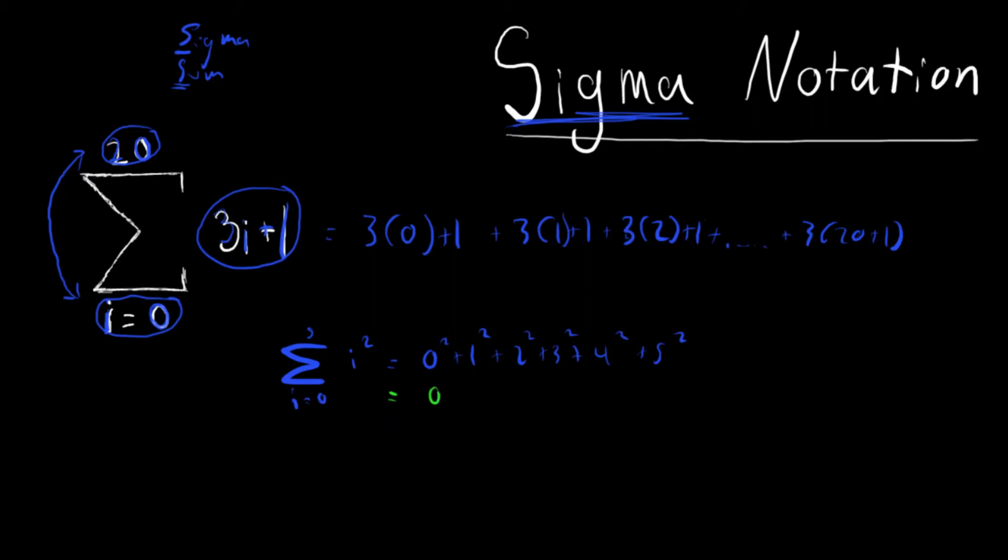So what this means, 0 squared is 0, plus 1 squared is 1, plus 2 squared is 4, plus 3 squared is 9, plus 4 squared is 16, plus 5 squared is 25.